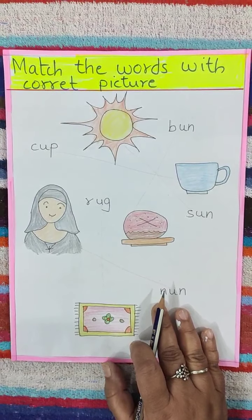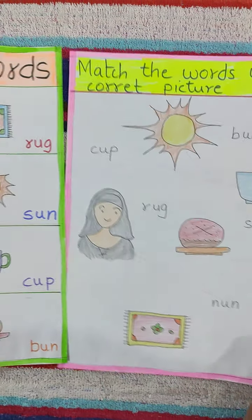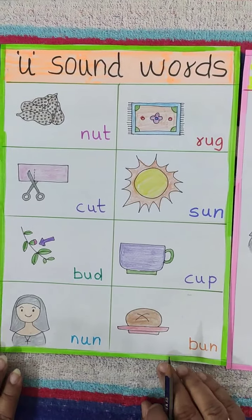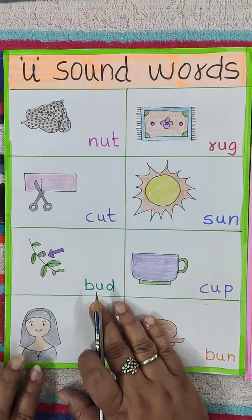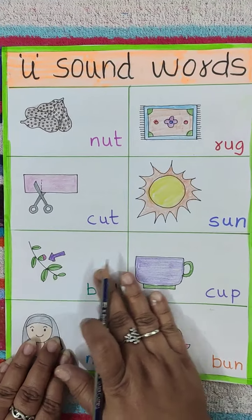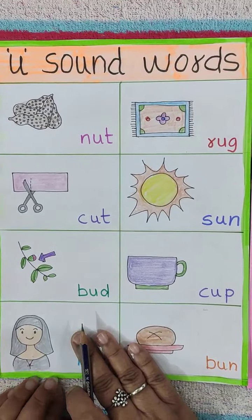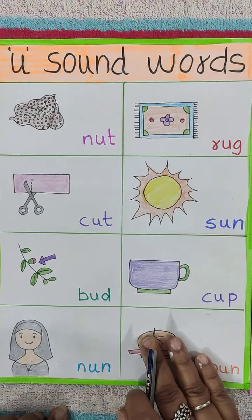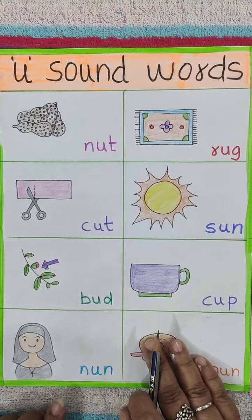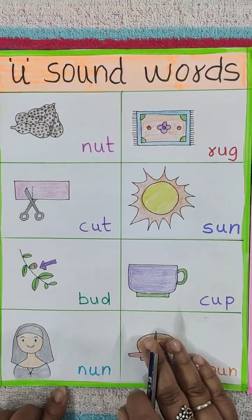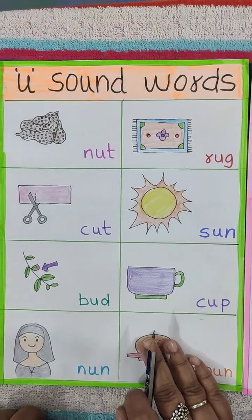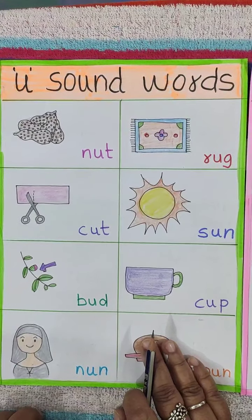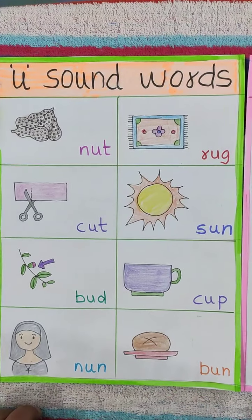Okay children, and you have to practice these U sound words. Practice how to spell them, write them and learn them. Okay children, take care. Wash your hands regularly. Stay at home. Be safe. Obey your parents. Okay children, bye.